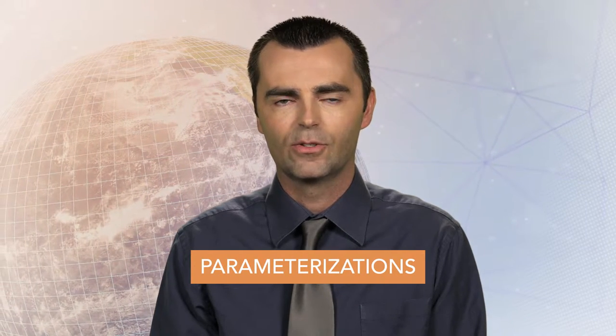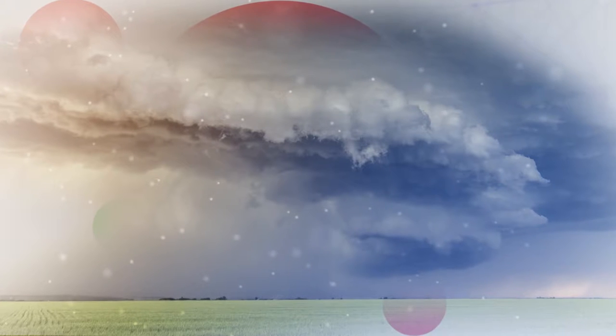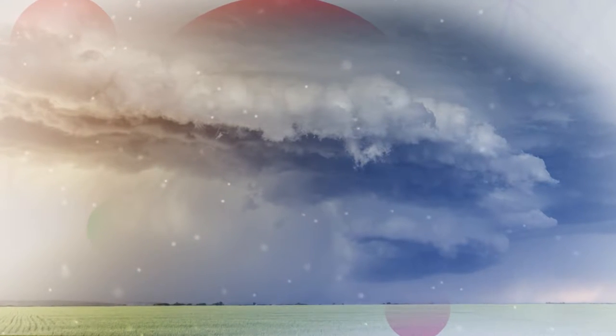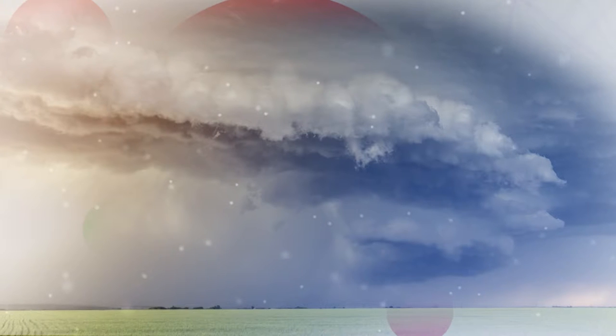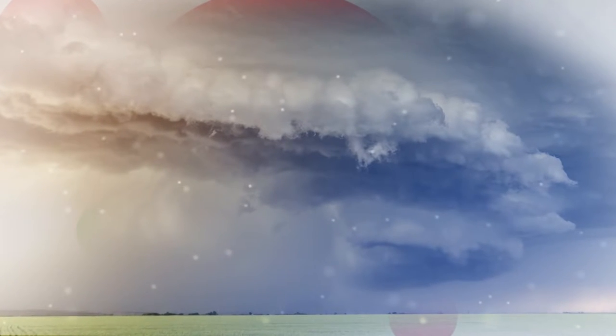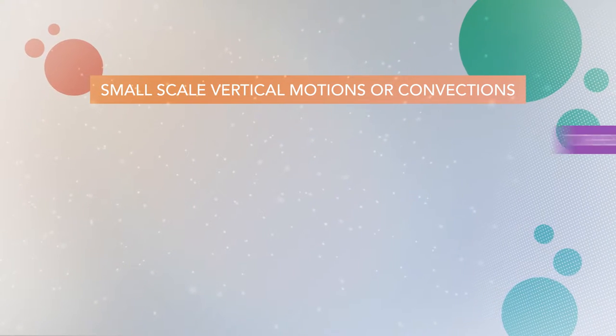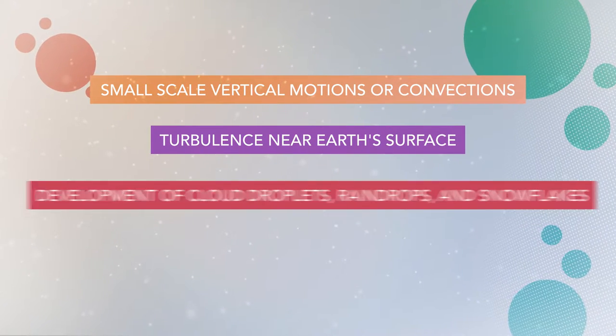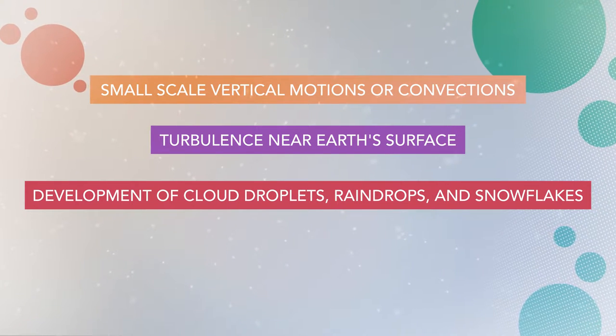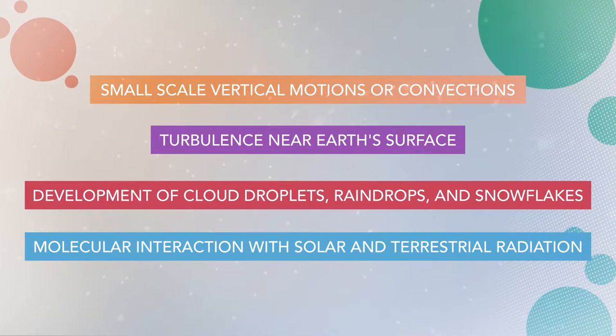Some processes are either too small in size or too short in duration to be modeled well. In these cases, simplified representations of these processes, called parameterizations, are used. Individual thunderstorms are one example of these small-scale phenomena. In these cases, modelers represent the physical impacts of these processes, such as the exchange of heat and moisture between the small-scale and the large-scale. Global climate models typically include parameterizations for processes such as small-scale vertical motions or convection, turbulence near the Earth's surface, development of cloud droplets, raindrops, and snowflakes, and molecular interactions with solar and terrestrial radiation.